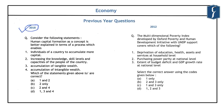This question was asked in 2018 and reads: human capital formation as a concept is better explained in terms of the process which enables — options include individuals accumulating more capital, increasing knowledge, skill levels and capacities of people, accumulation of tangible wealth, and accumulation of intangible wealth. This concept is explained in the NCERT of Class 11th Indian Economic Development, referring to investment in human development through education and health.